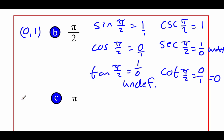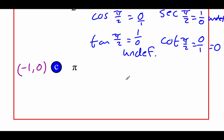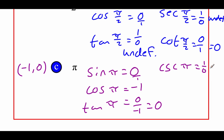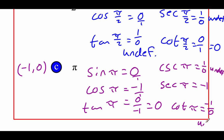For angle pi, the ordered pair is (negative 1, 0). Sine is the Y value, so it's 0. Cosine is the X value, so it's negative 1. Tangent is Y over X: 0 over negative 1, which equals 0. For cosecant, we flip 0 over 1 to get 1 over 0 — undefined. For secant, we flip negative 1 over 1 to get negative 1. For cotangent, we flip 0 over negative 1 to get negative 1 over 0 — undefined.